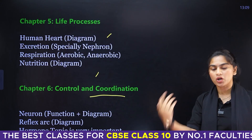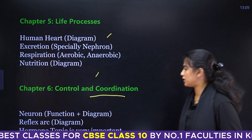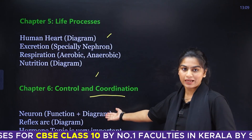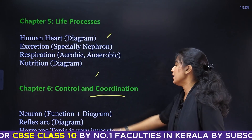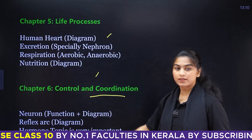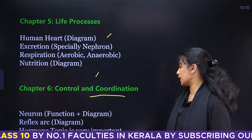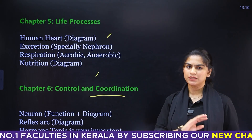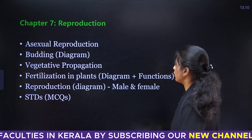Chapter six is Control and Coordination. Neuron function and its diagram are important. Study the Reflex arc diagram thoroughly. The hormone topic is really important.